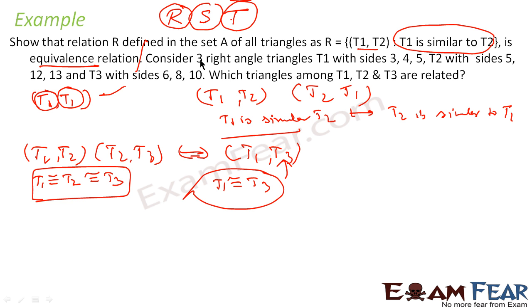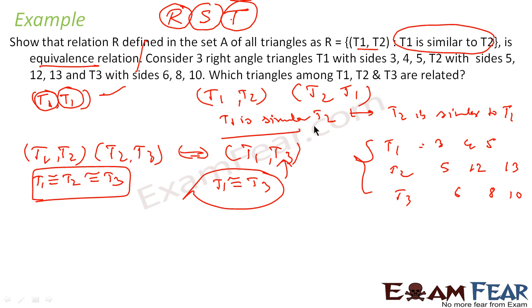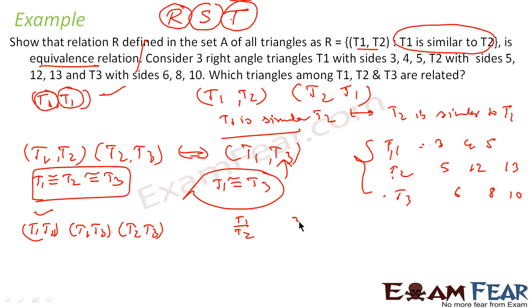Now the question says we have three right triangles: T1 with sides 3, 4, 5; T2 with sides 5, 12, 13; and T3 with sides 6, 8, 10. We need to find which triangles are similar. Comparing T1 and T2: the ratios of sides are 3/5, 4/12, and 5/13 — these are not equal, so T1 and T2 are not related.